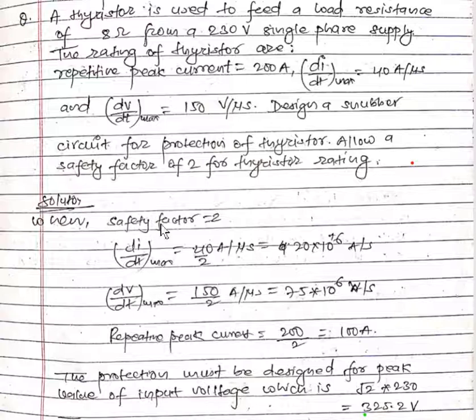When safety factor is 2, then dI/dt max will be 40 upon 2. Here in the equations we have given 40 ampere per microsecond. If the safety factor is 2 then it will be divided by 2, so it will be 20 × 10^6 ampere per second.